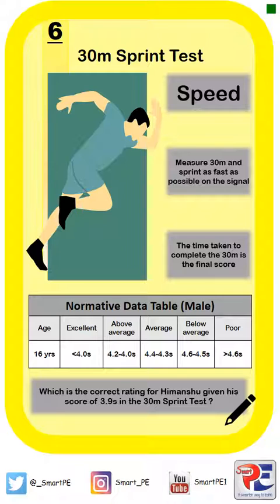In your exam you're likely to have to answer a question that requires you to interpret data in the form of a graph or a table. So I'd like you to look at the table below. In the excellent column, you will score excellent for your 30 metre sprint test if your time is less than four seconds — that's what the arrow pointing to the left means.